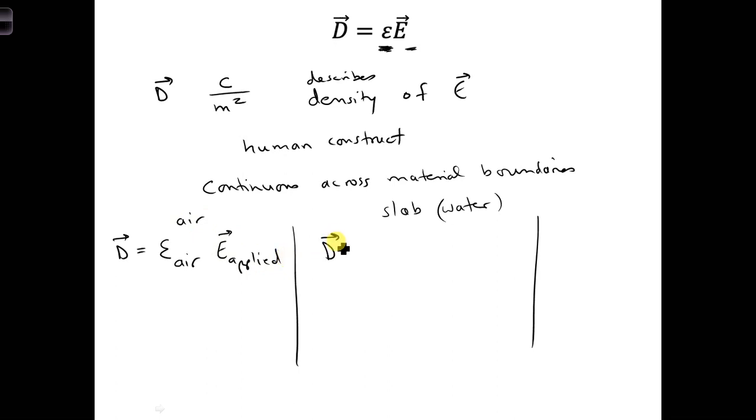Then, in the slab, we have epsilon, and the dielectric, the permittivity of the dielectric, and we have the E field, the total E field.